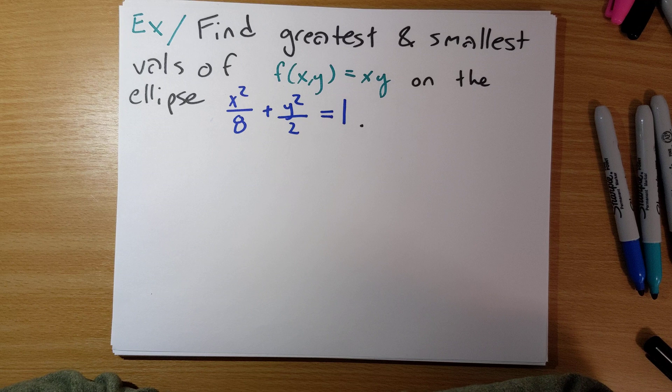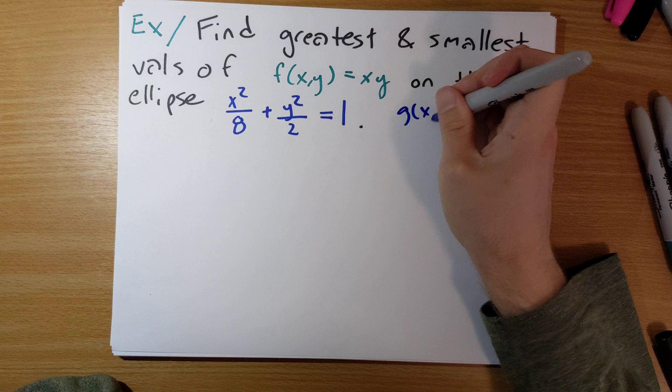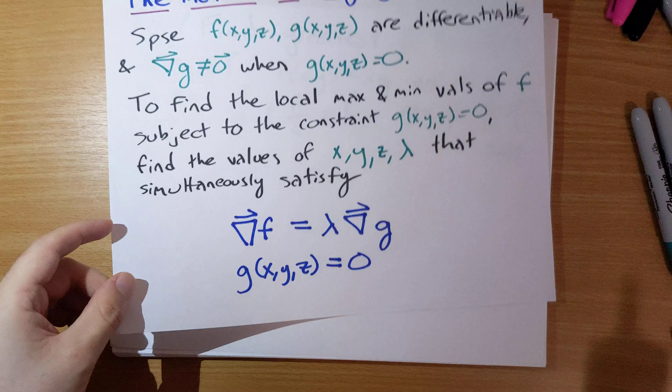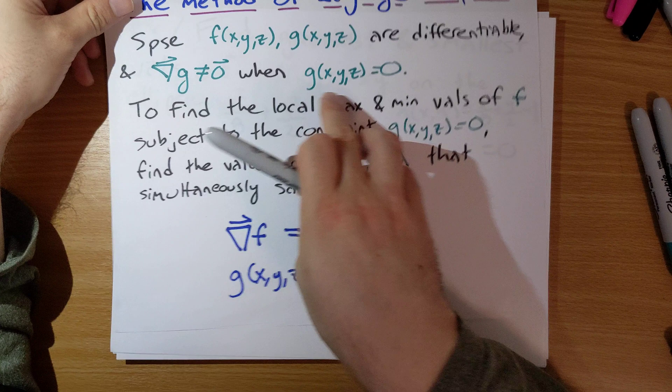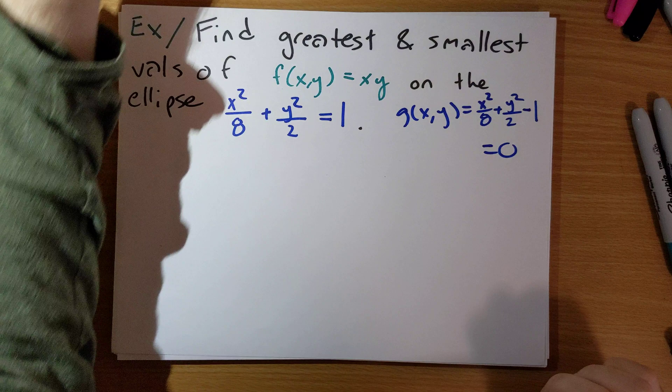We're already told that f of x, y equals x times y. Our g of x, y is going to be x squared over 8 plus y squared over 2 minus 1, so we can have this equal to 0. However, in practice, if you don't move the 1 to the other side and just say g of x, y equals x squared over 8 plus y squared over 2 with g equal to a constant, the gradient won't change when we take partial derivatives — it won't make any difference.